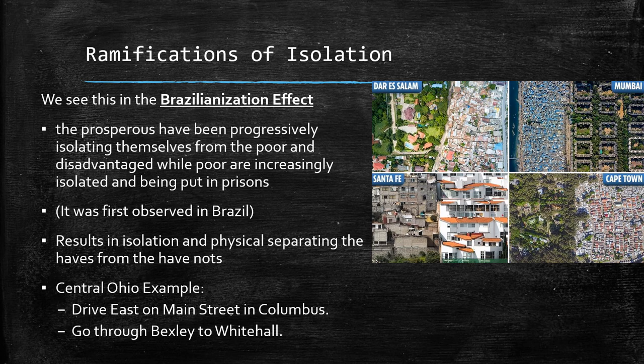The greater the social stratification in a given society, the more Brazilianization occurs. The farther hyper-rich people are from hyper-poor people means that these people will start living increasingly different lifestyles, and especially the rich people will start separating themselves from the poor people.